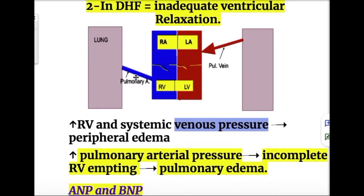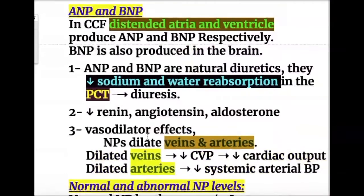Increased pulmonary arterial pressure in both systolic and diastolic failure causes incomplete RV emptying, and back pressure causes pulmonary edema. So either pulmonary edema or peripheral edema results from increased venous pressure.